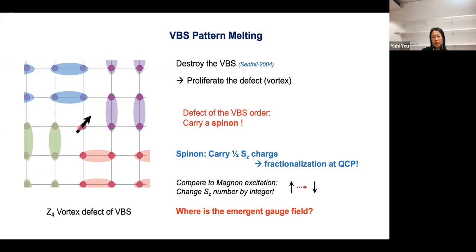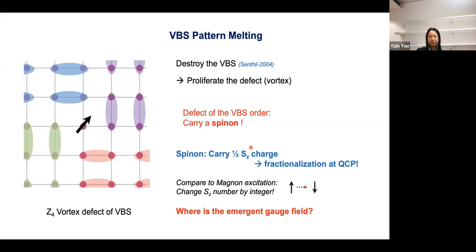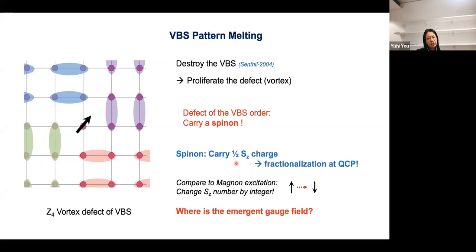What quantum number does a spin-on carry? Without the spin-on, if everything is paired into a valence bond singlet, the total Sz number is always zero. Whenever we have a Z4 vortex with a free spin-on degree of freedom, no matter whether that spin-on polarizes up or down, the total Sz quantum number change is always one-half. So a spin-on carries a half-Sz charge, which we call the magneton charge. This is a concrete manifestation of fractionalization, because in a usual spin system the elementary excitation like a magnon would always change the Sz quantum number by an integer, whereas the spin-on carries a half portion of the usual magneton charge.